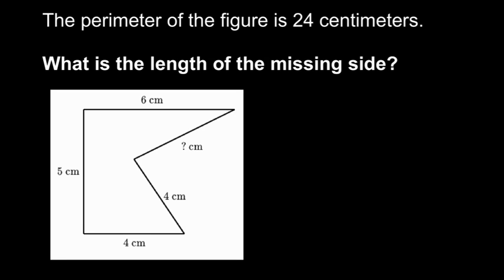The perimeter of the figure is 24 centimeters. What is the length of the missing side? So we're told this figure has a perimeter of 24 centimeters. What that tells us is that the distance around the entire outside is 24 centimeters.